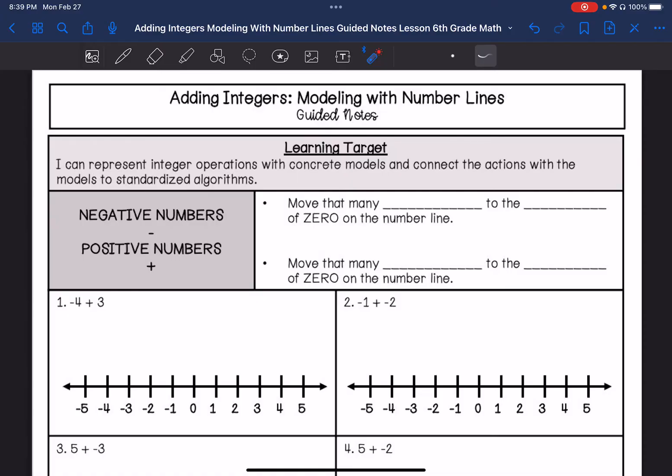When we have negative numbers, we are going to move that many spaces to the left of zero. So if your negative number is the number you start with, you're going to go that many spaces to the left of zero on the number line. If you have a positive number you start with, you move that many spaces to the right. When we add a negative number, we're moving left. When we add a positive number, we are moving right.